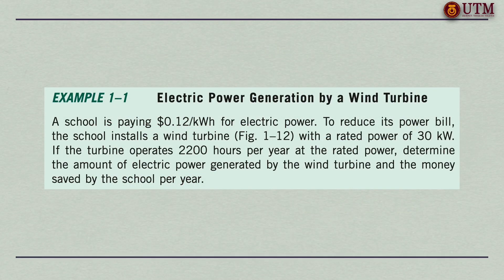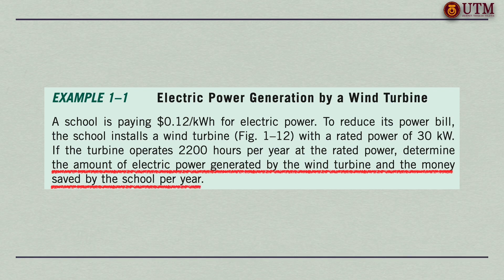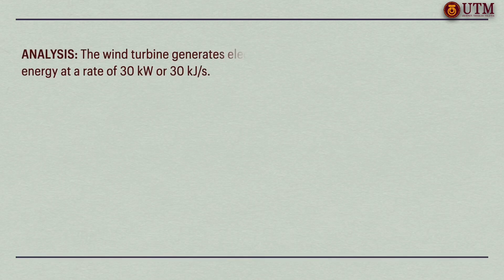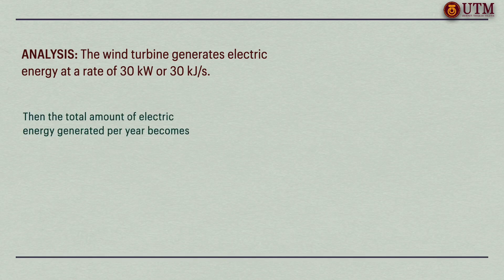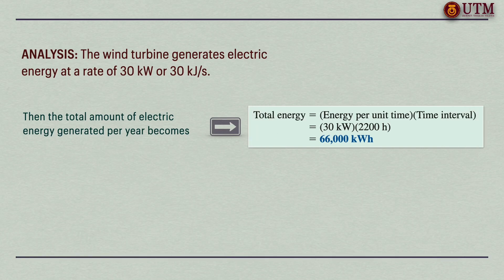Let us discuss example 1.1 to demonstrate dimensional homogeneity. Based on this example, the amount of electric power generated by the wind turbine and the money saved by the school per year to be determined. A wind turbine is installed to generate electricity. The wind turbine generates electric energy at a rate of 30 kilowatt or 30 kilojoule per second. Then, the total amount of electric energy generated per year becomes 66,000 kilowatt hour. The money saved per year is the monetary value of this energy can be determined as shown.